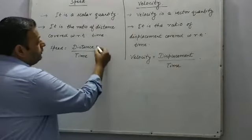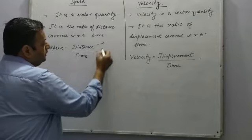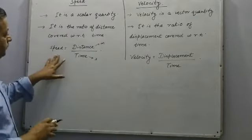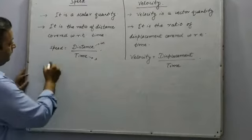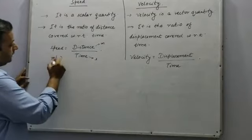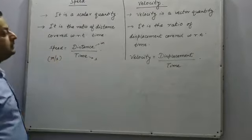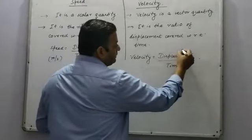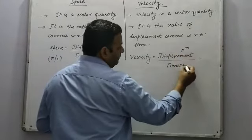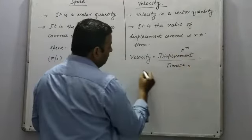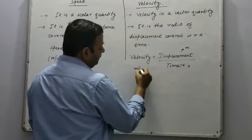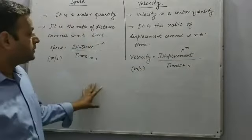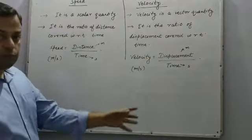The SI unit of distance is meter and time is second, so the unit of speed will be meter per second. Similarly, the SI unit of displacement is also meter and time is second, so the unit of velocity will also be meter per second. So we can say speed and velocity both have the same units.